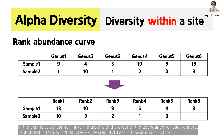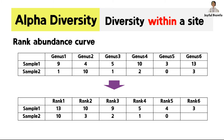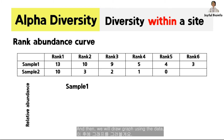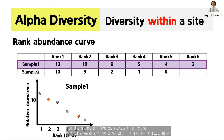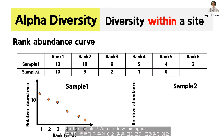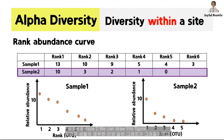In the example, we can remake the table with the order of the abundance for each genus. And then we will draw a graph using the data. For sample 1, we can draw this figure. For sample 2, we can draw this figure.